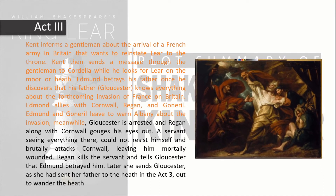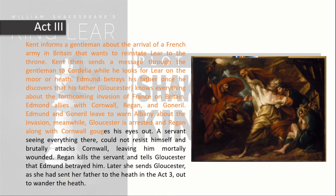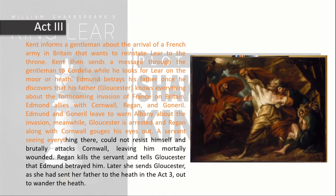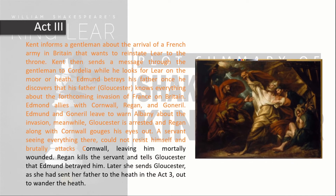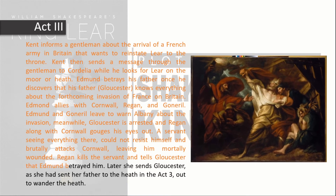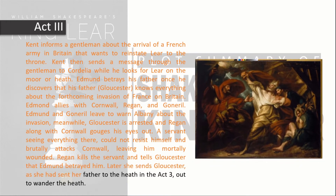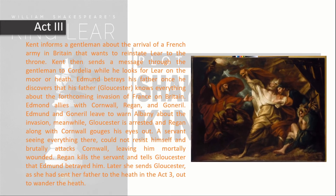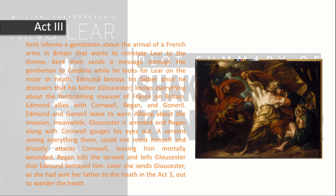Edmund and Goneril leave to warn Albany about the invasion. Meanwhile, Gloucester is arrested and Regan along with Cornwall gouges his eyes out. A servant, seeing everything there, could not resist and brutally attacks Cornwall, leaving him mortally wounded. Regan kills the servant and tells Gloucester that Edmund betrayed him. Later she sends Gloucester out to wander the heath, just as she had sent her father in Act 3.